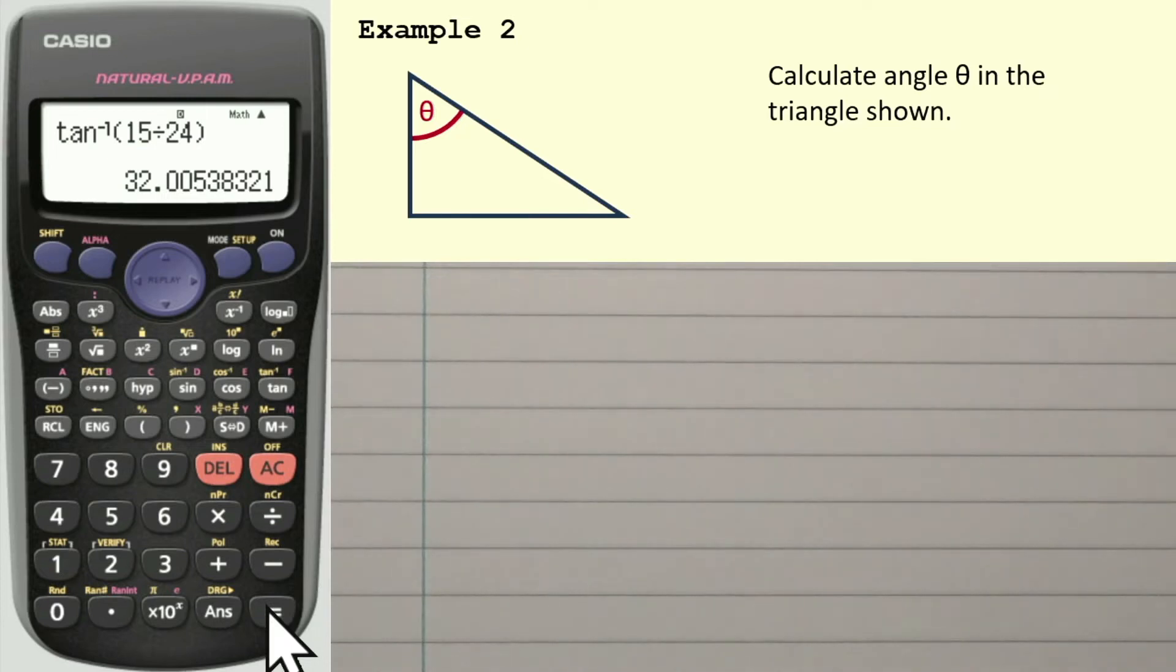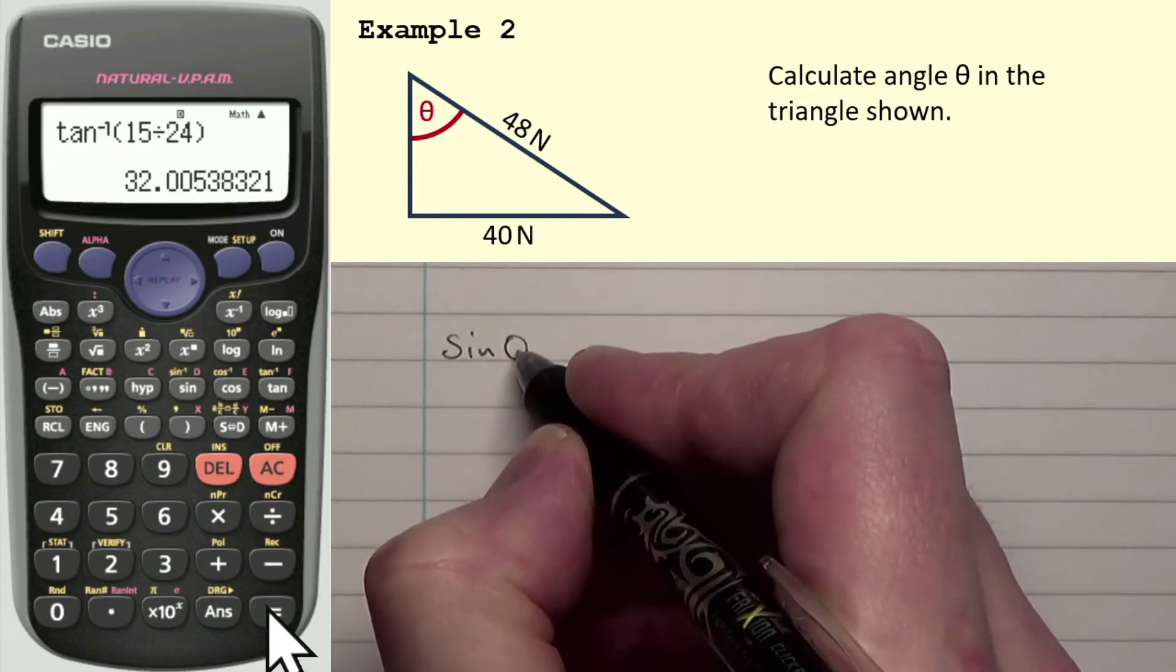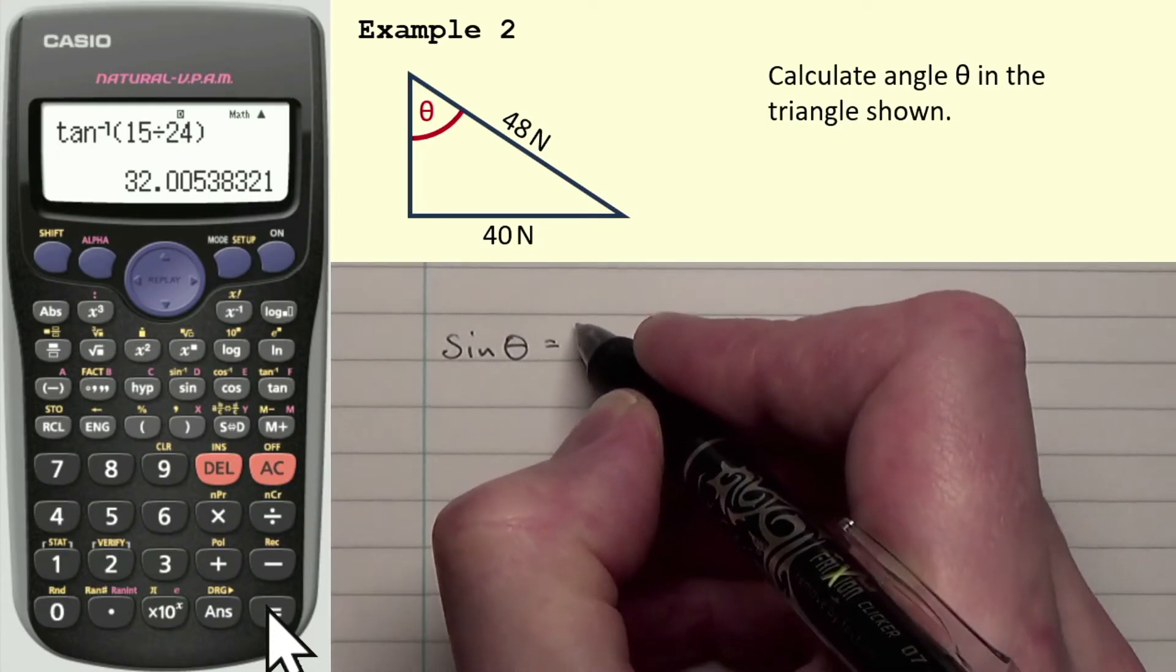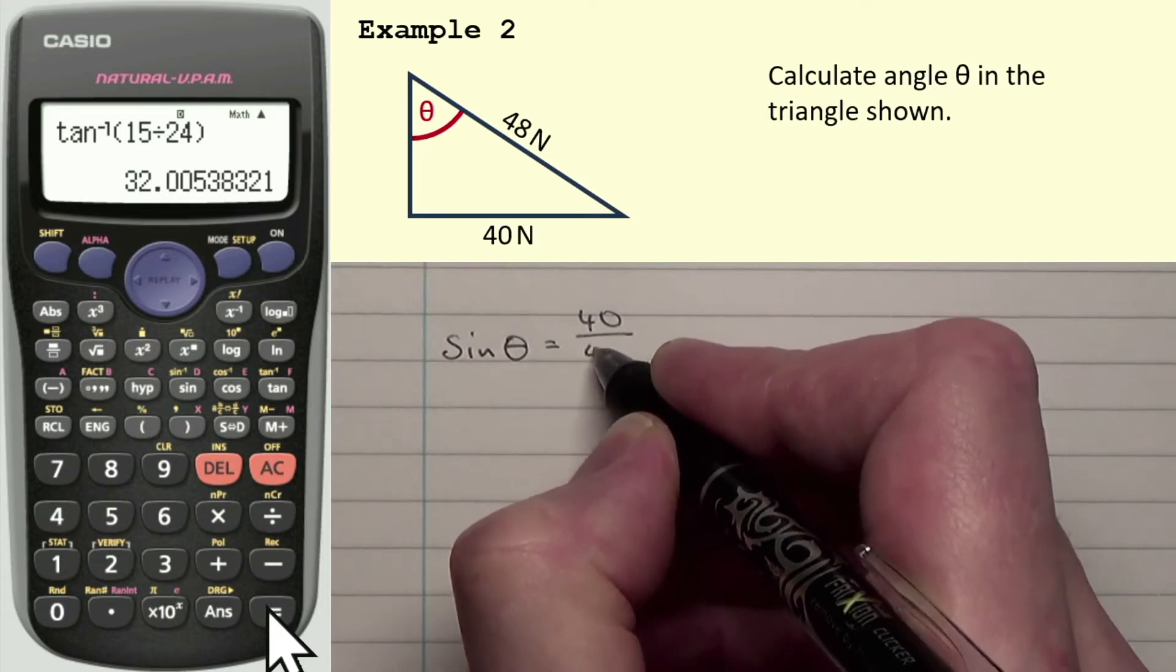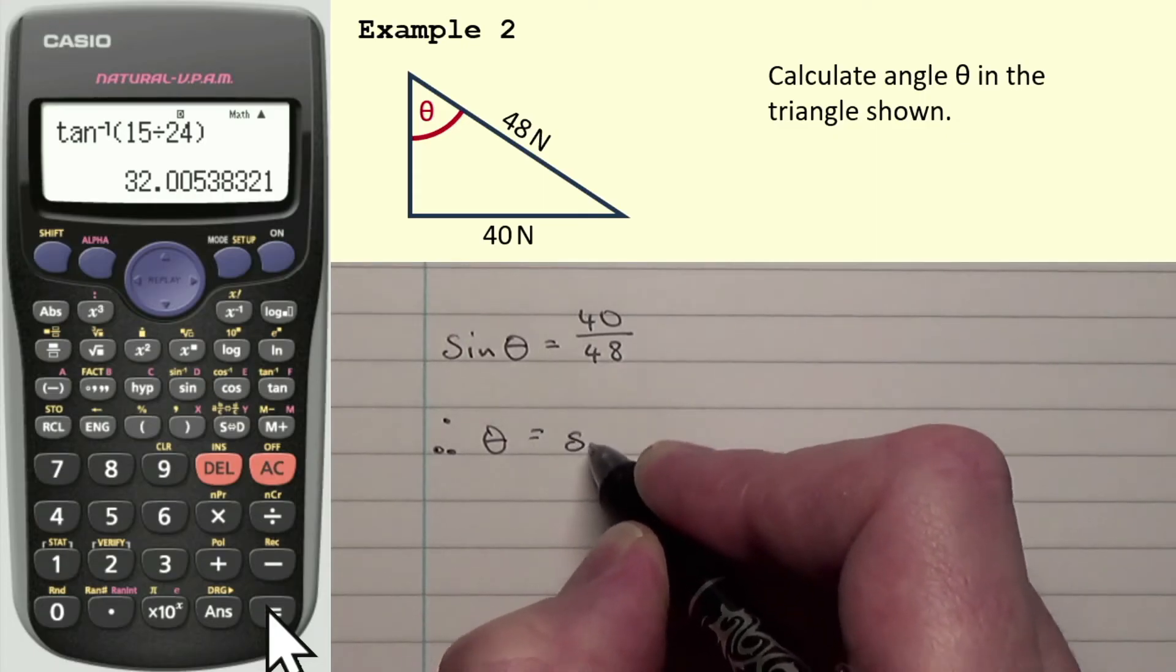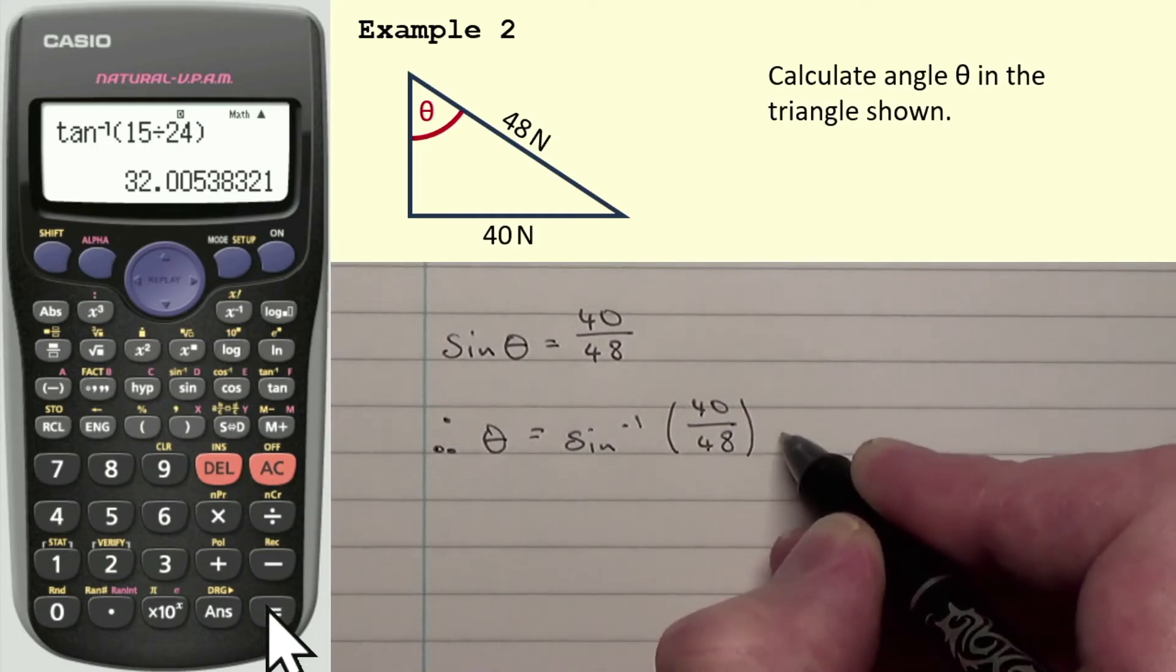So it says calculate angle theta in the triangle shown. And we have this side, which again, this is opposite the angle, that's obviously the opposite side. This is the longest side, which is the hypotenuse. I'll give you a second just to think which function that is. Hopefully you know that it's the sine function. So sine of the angle is opposite over hypotenuse. So sine of the angle would be opposite, which is 40, divided by the hypotenuse, which is 48. And that means, therefore, the angle would be sine to the minus 1, 40 over 48.